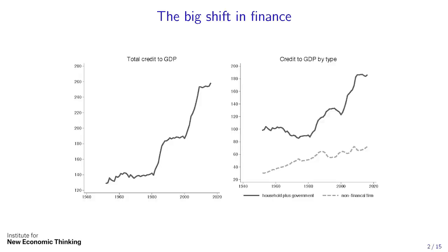The main fact is what GST called the hockey stick — since the 1980s, total credit to GDP has basically skyrocketed. If you split the private credit portion into household and non-financial corporate credit, essentially the big growth since the 1980s is in household credit. I'm adding government credit as well, because I'll argue later that household and government debt both essentially finance the demand side of the economy, which is why I think of them as substitutes.